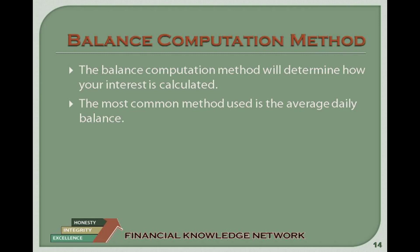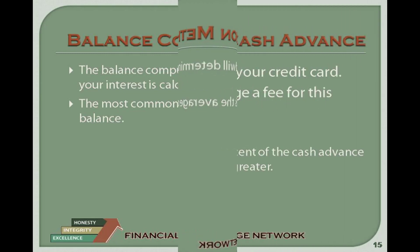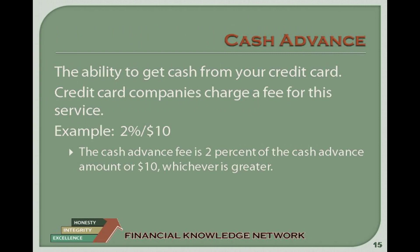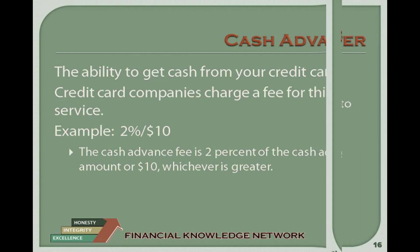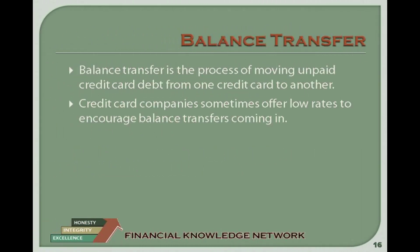Make sure you understand the balance computation method, as this will directly affect how much interest you are charged. The most common method is called the average daily balance. Be sure you are aware of how they calculate your interest expense. If the card offers a cash advance option, understand the cost — a typical charge is 2% of the amount or $10, whichever is greater. These fees must be factored into everything you are considering using the money for. If the card offers a balance transfer option, you may be able to move a balance from a high-interest card to a lower-interest card, reducing your cost. Make sure you have read the fine print carefully, as there are usually rules about temporary balances and significant penalties may apply.